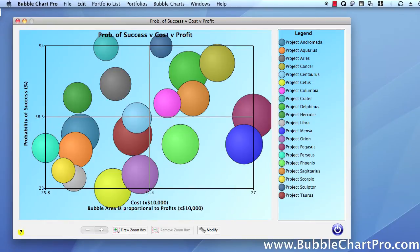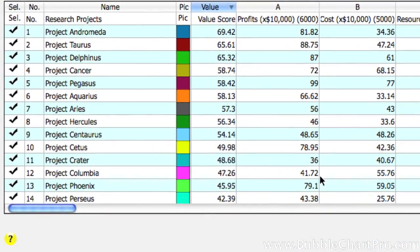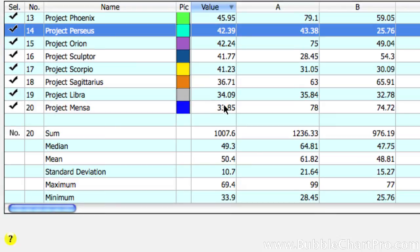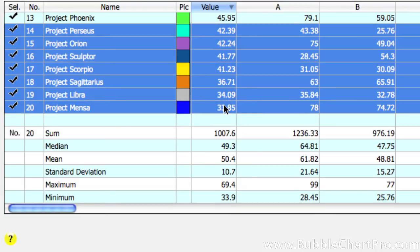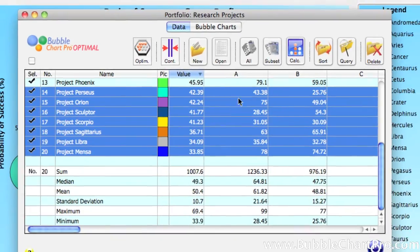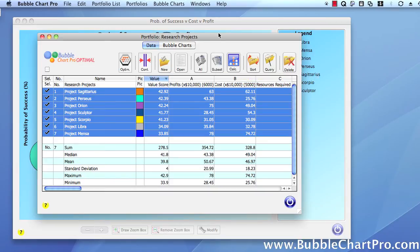You can also modify your charts directly in your data in the Portfolio form. So, if we bring the Portfolio form forward, we can select a subset of projects, and we'll only see them displayed in the chart. For example, let's look at only projects that have overall value scores of less than 45. So, we select the projects that have scores below 45. Next, we'll click the subset button, and only those projects that we selected are displayed in the Portfolio form and in the Bubble Chart form.